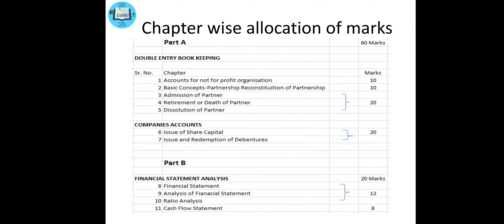Now we are going to focus on the chapter-wise allocation of marks. Your book is divided into two parts: Part A and Part B. Part A contains the double entry bookkeeping.